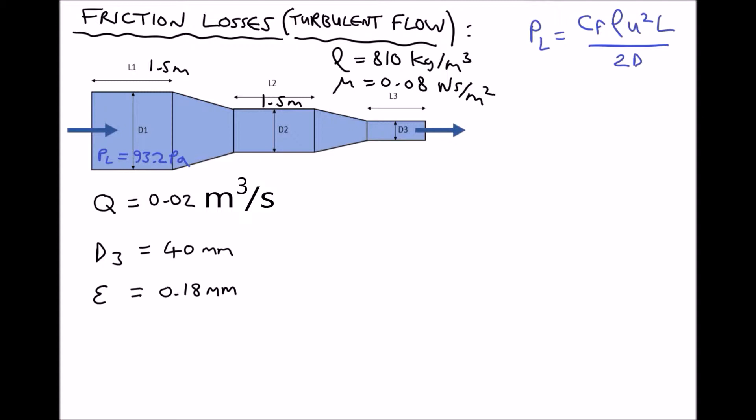So we're going to begin in exactly the same way. We're going to calculate the velocity in section 3 of the pipe, and then we're going to calculate the Reynolds number in that section of the pipe. So we know that u3 is just going to be Q over A3. Q is given as 0.02, and the area of that section of pipe is going to be π times the radius squared. Well the radius in this case is going to be 20mm, because we have a diameter of 40mm. 20 divided by 1000 to convert to meters is 0.02, giving us a velocity in section 3 of the pipe equal to 15.915 meters per second.